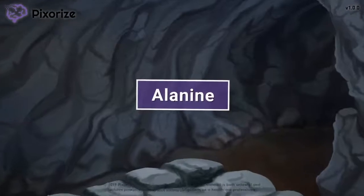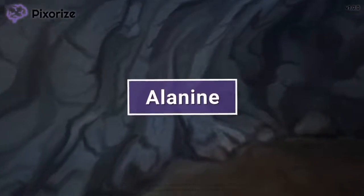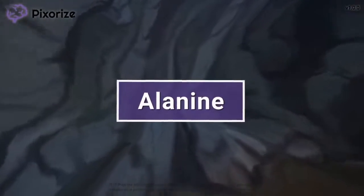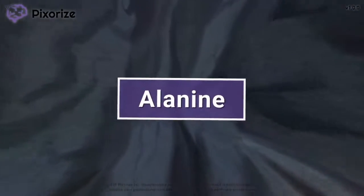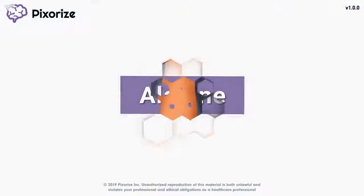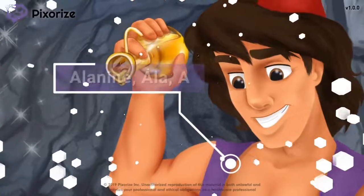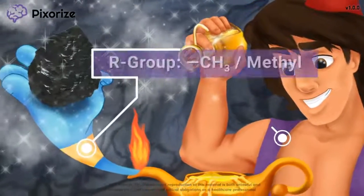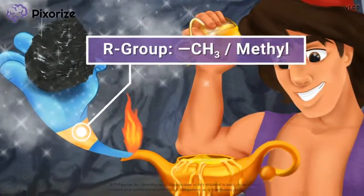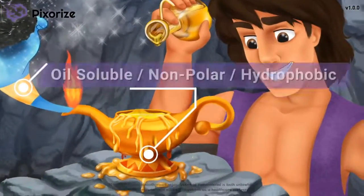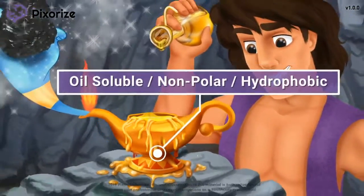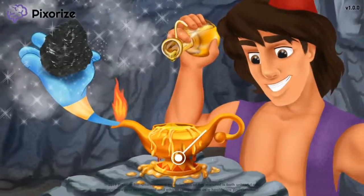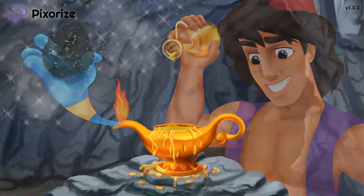Alanine is one of the 20 different amino acids that make up proteins in our body. In this visual mnemonic, we'll give you an easy way to remember the structure and properties of alanine, so you'll be ready to crush it on test day.